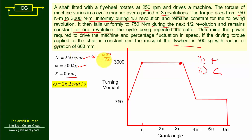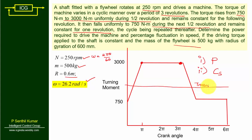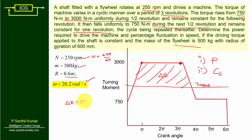From the given data, we can find ω using the formula 2πN/60. So ω = 2π × 250 / 60 = 26.2 radians per second. Next, we need to find T_mean. The area above the T_mean line represents ΔE. We need ΔE because ΔE = Iω²·CS. If we know ΔE and ω, we can find CS, which is subdivision two.